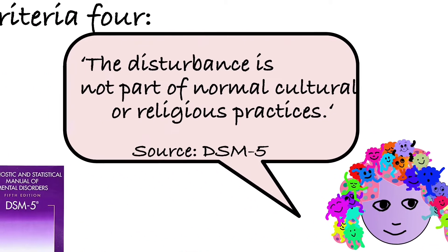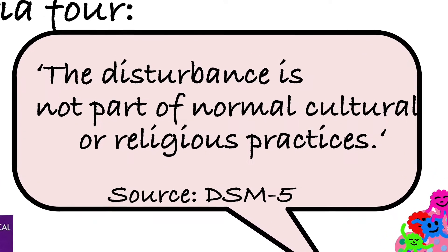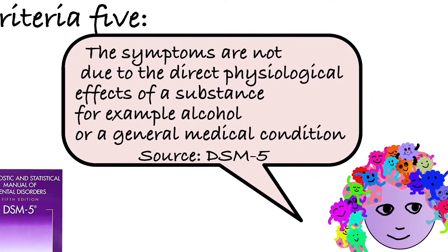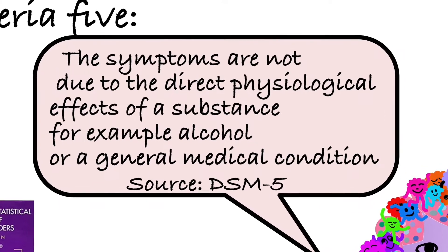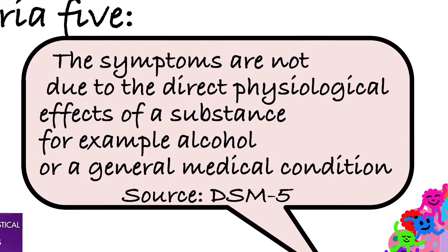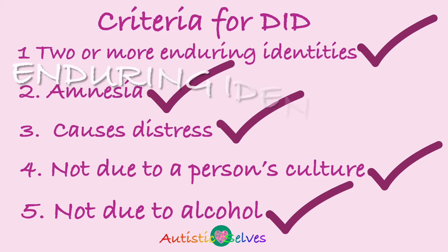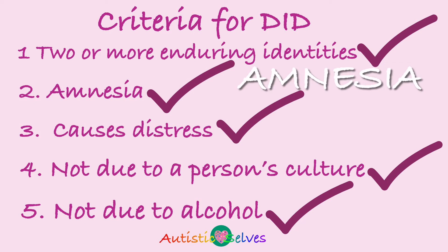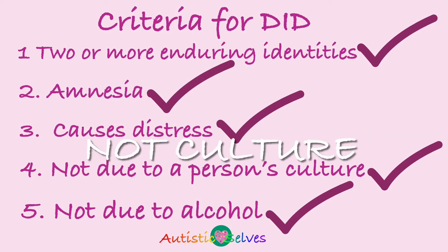The final criteria in the DSM-5 are that the disturbance is not part of normal cultural or religious practices and that the symptoms are not due to the direct physiological effects of a substance — for example alcohol — or a general medical condition. To summarise, we were formally diagnosed with DID in 2004 because we met all the criteria in the DSM-5, namely that we were found to have two or more enduring personalities in the presence of amnesia, and that our condition caused us distress, was not due to our culture, and occurred outside the use of alcohol.